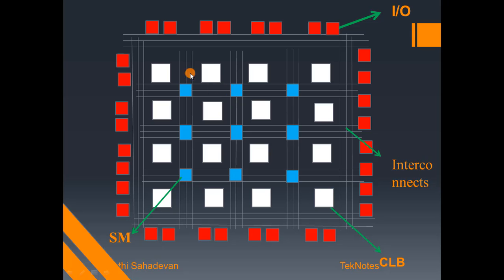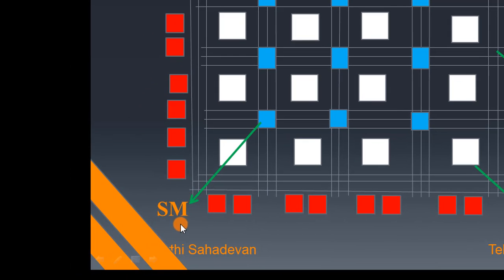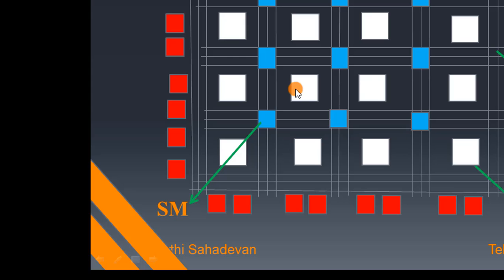Next, we have a blue box. This represents the horizontal and vertical lines and junction point, which is the Switching Matrix. Each CLB has a few interconnecting lines — horizontal lines — and we must configure where to route the output using the switching matrix.